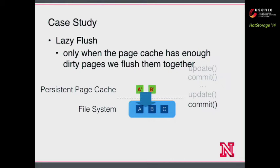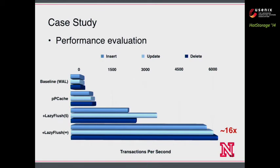Lazy flush can take advantage of the high sequential bandwidth of flash storage in smartphones. The performance comparison shows lazy flush significantly boosts performance over both persistent page cache and the baseline write-ahead log. The reason is that write IO locality to flash storage is very high, so repeated writes can be absorbed by the persistent page cache. The lazy flush writes much less data to flash storage — for example, in SQLite, whenever you update a record, you have to modify the first block in the table file to update the change counter, and that kind of repeated write is absorbed by the persistent page cache.